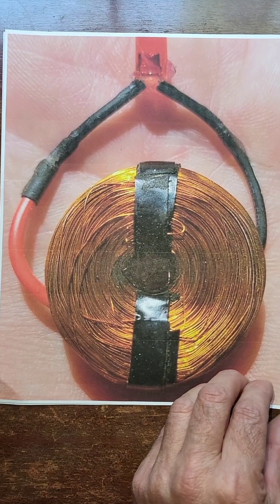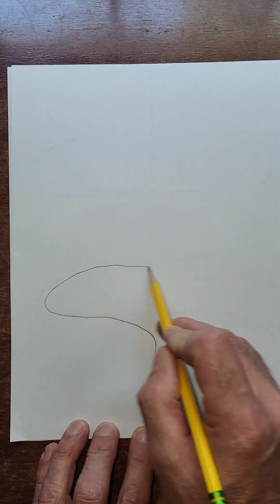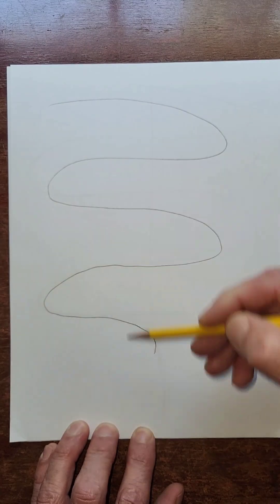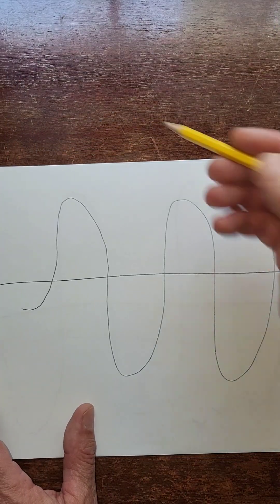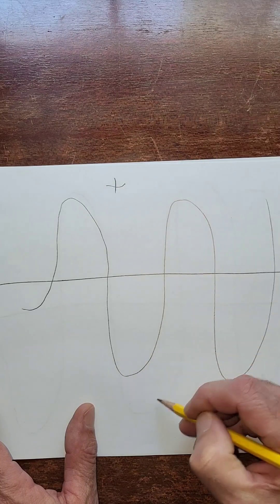That's how the electrons move in the coil—they go back and forth like this, and what you end up with is a sine wave.